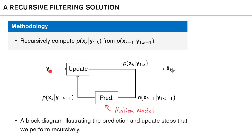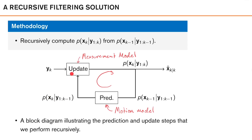We want to use this predicted density with the current observation yk to get the posterior filtering density. To do that we make use of our measurement model in an update step. Once we have computed the posterior density we can compute an estimate of our current state, x hat k given measurements up to time k. Then we can start all over again, making this our new prior and repeating. So we have a recursive solution: starting from the posterior density from the previous time instance, we make a prediction, then we make an update, and we get a new posterior density. Note that all the densities computed here have the same dimensionality as the state, so we have avoided that the computational complexity grows with time.